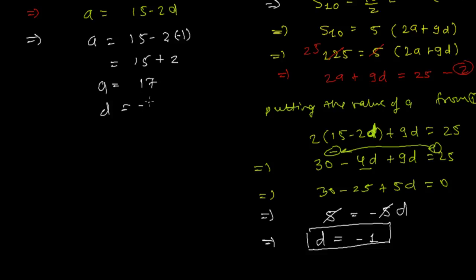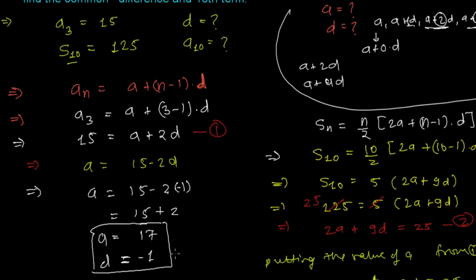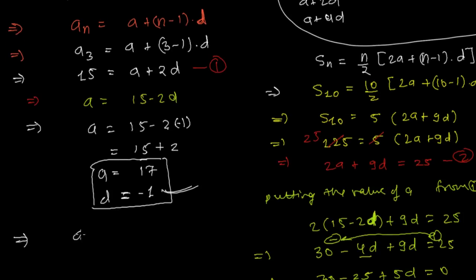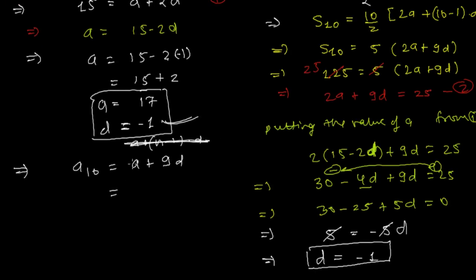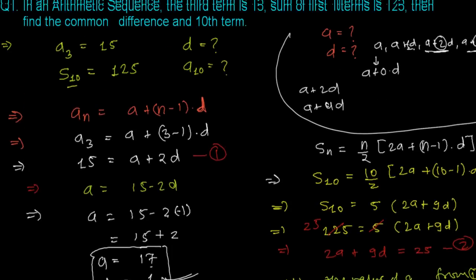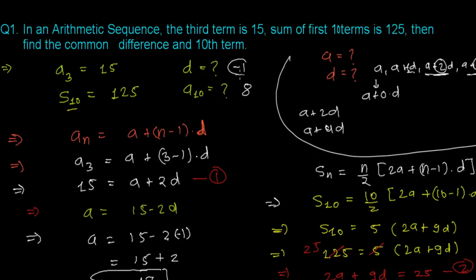Now substituting d = −1 back: a = 15 − 2(−1) = 15 + 2 = 17. So the first term is 17 and the common difference is −1. Now for the 10th term: a10 = a + 9d = 17 + 9(−1) = 17 − 9 = 8. So the 10th term is 8 and the common difference is −1. That's our answer.